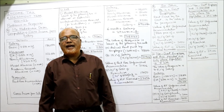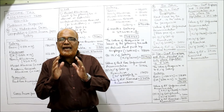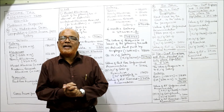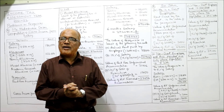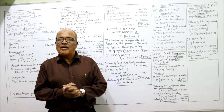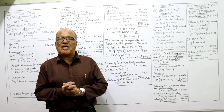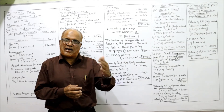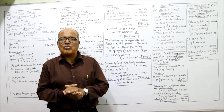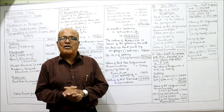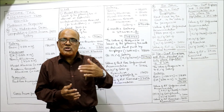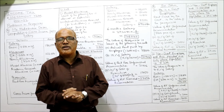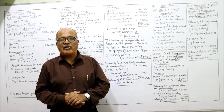This is the end of the 8th problem. Totally, eight problems have been completed on the value of rent-free accommodation. In the next video, we will start other perquisites apart from rent-free accommodation and solve problems on those perquisites.